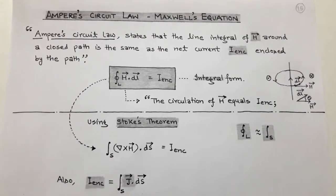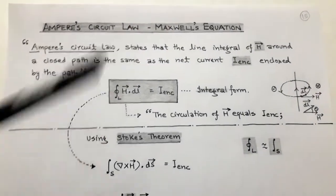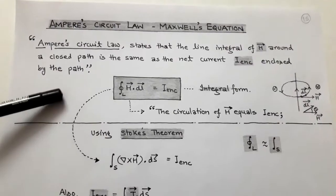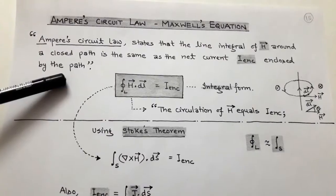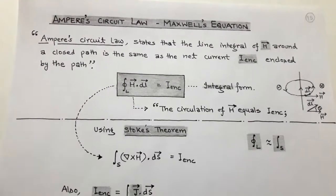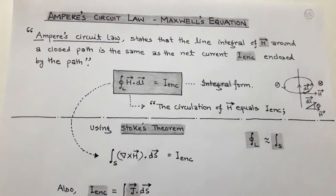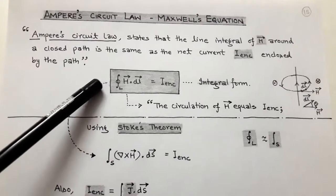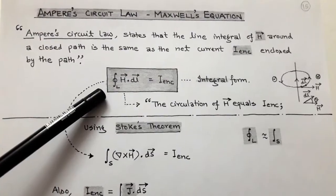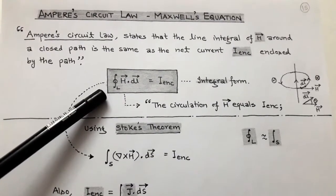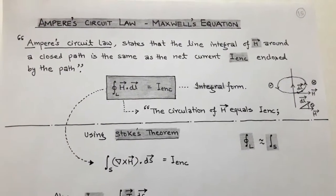The topic is Ampere's circuit law and the introduction of Maxwell's equation. Ampere's circuit law states that the line integral of H vector around a closed path is equal to the net current enclosed by the path. Mathematically, the Ampere circuit law is: closed line integration of H vector dot dL vector equals I enclosed. This is the integral form of Ampere's circuit law.